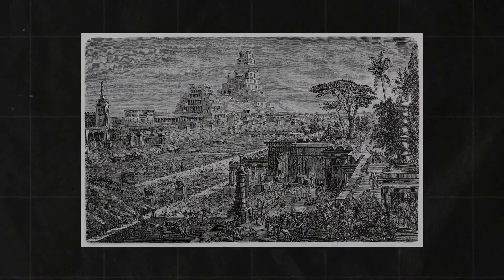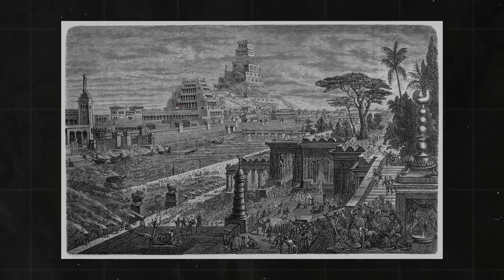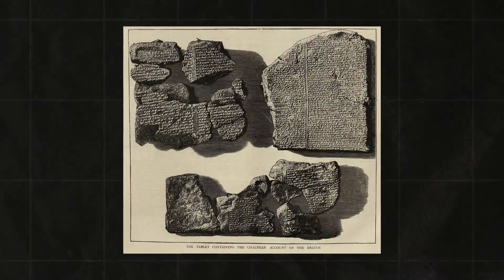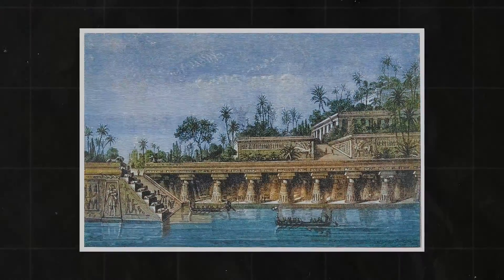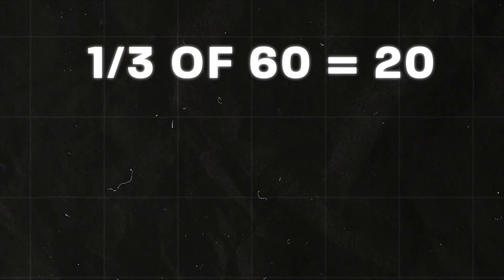Ancient Mesopotamia is often referred to as the cradle of civilization — it's where writing was probably invented for the first time, as well as some of the world's oldest cities. Ancient Mesopotamians likely used base 60 for lots of different reasons, but most importantly, it is extremely divisible. Fractions are just so much easier.